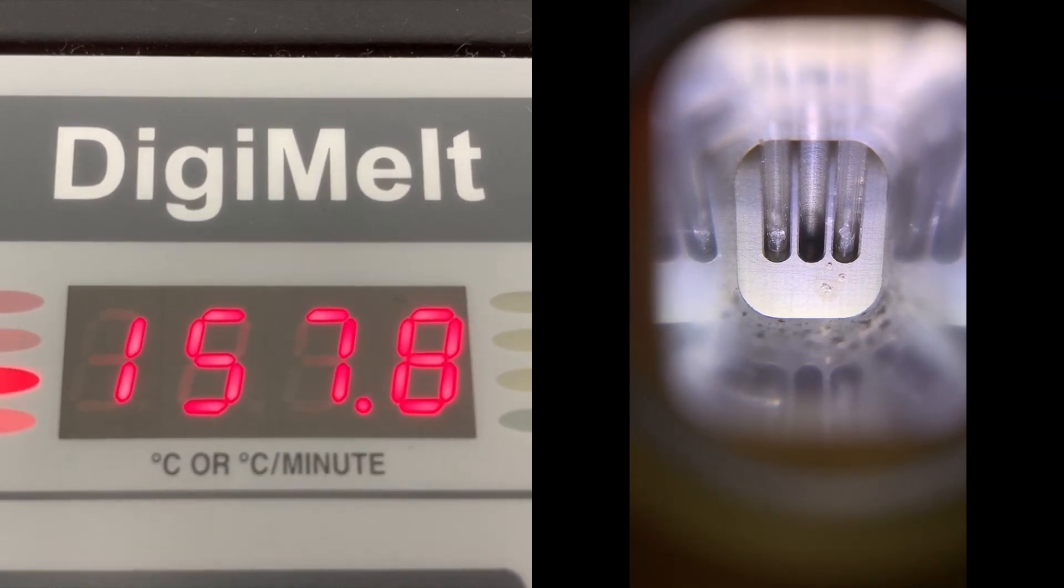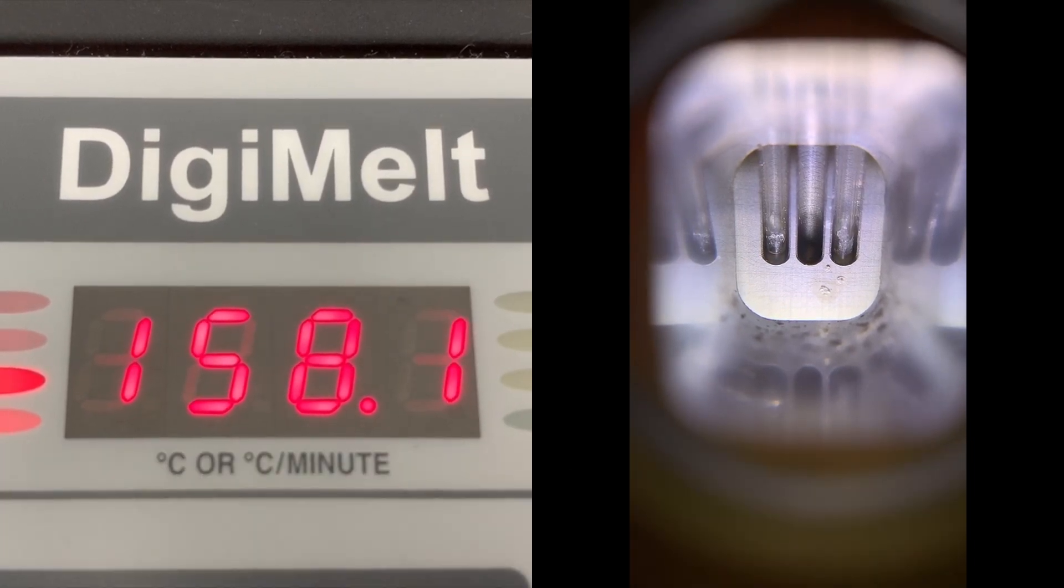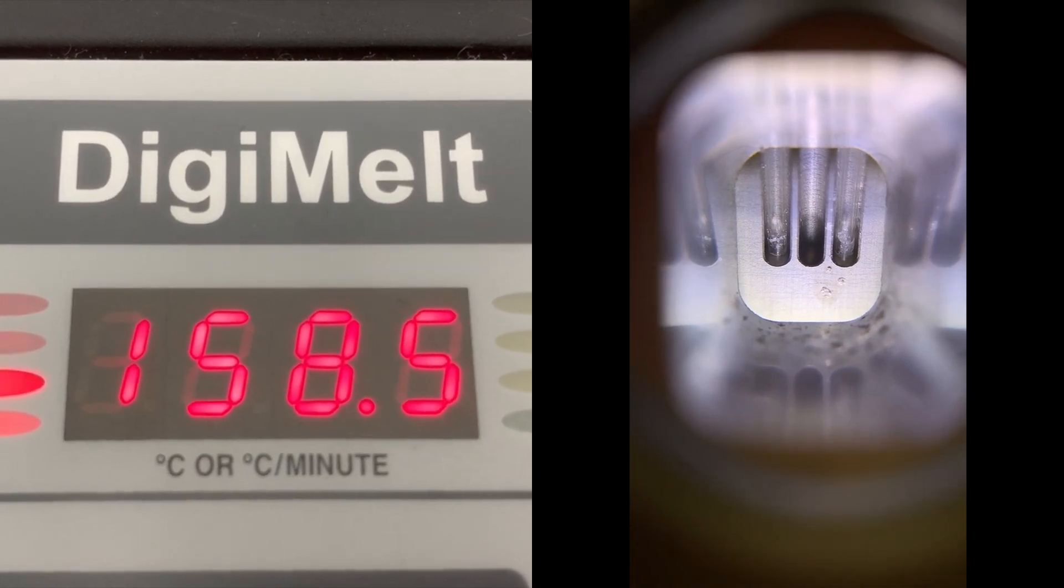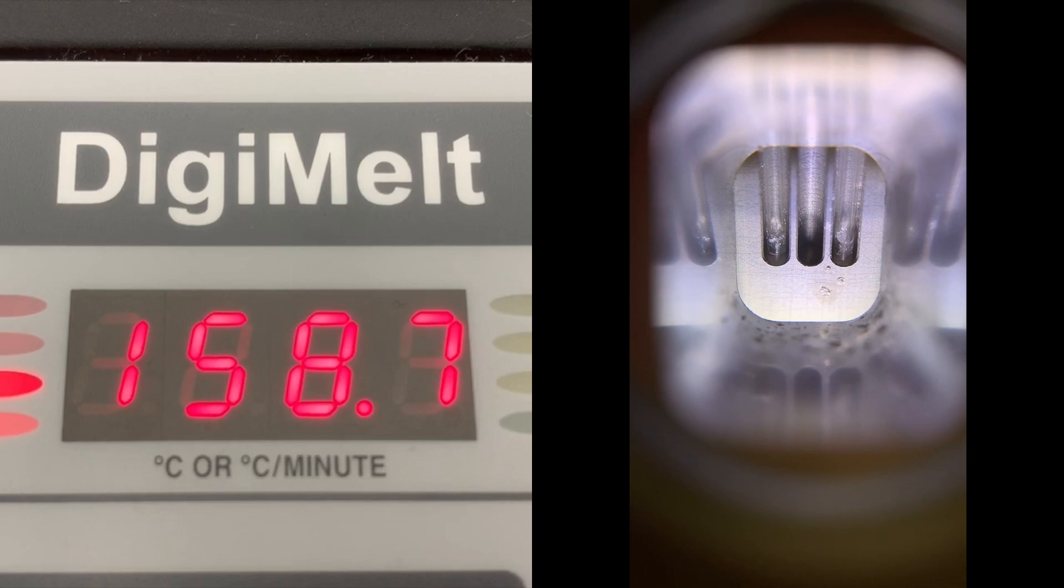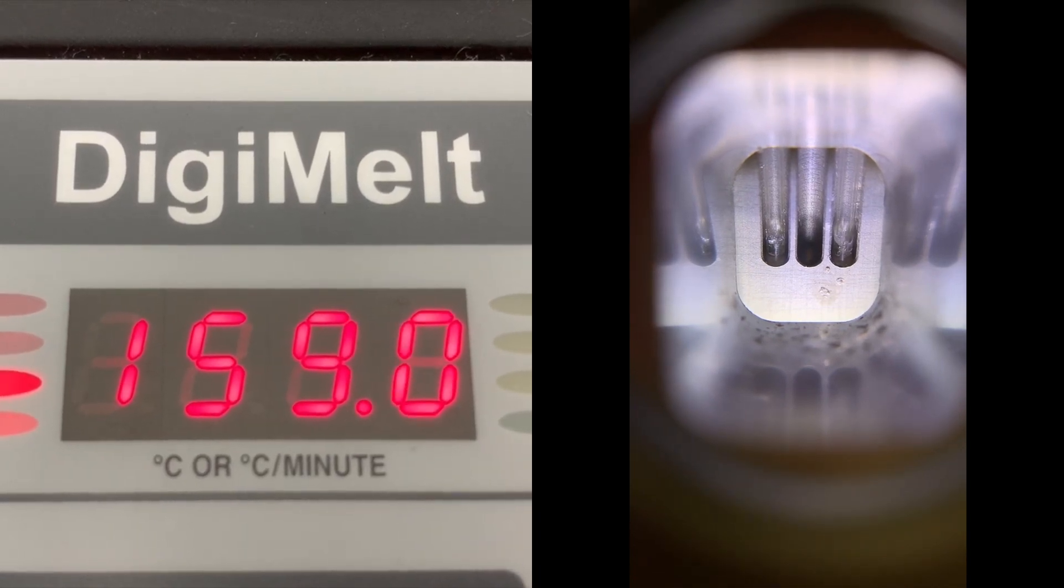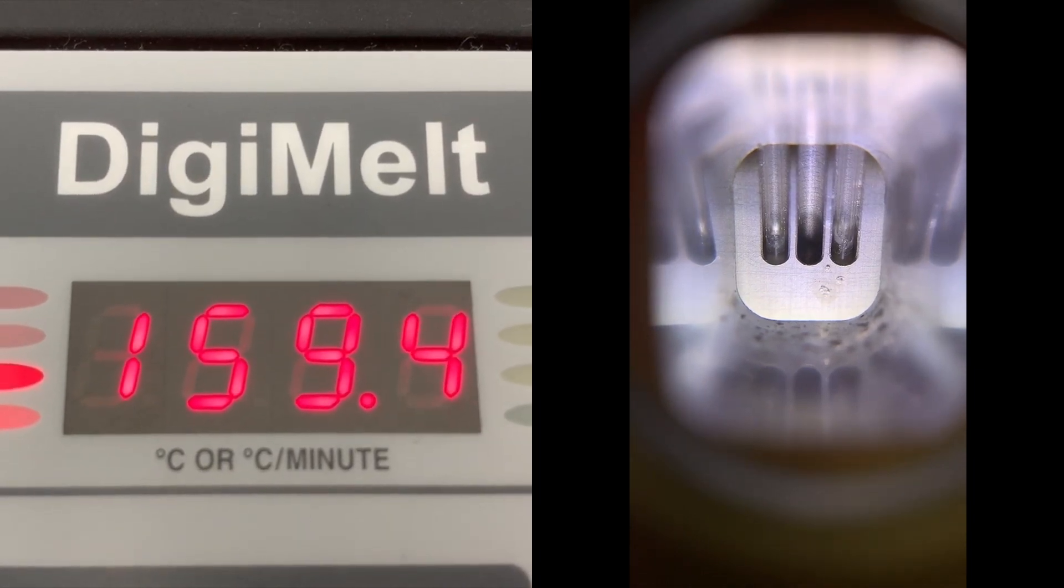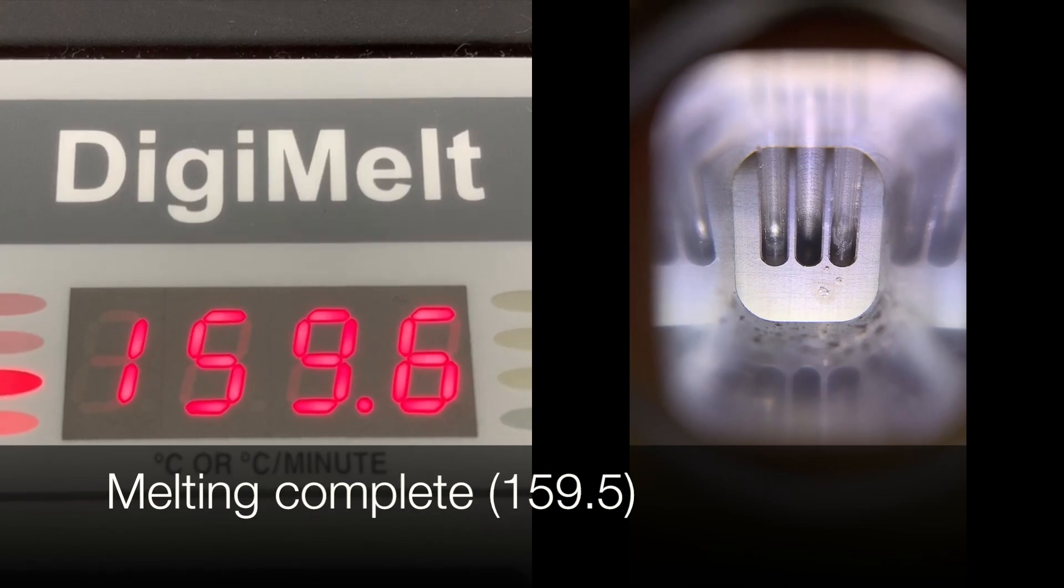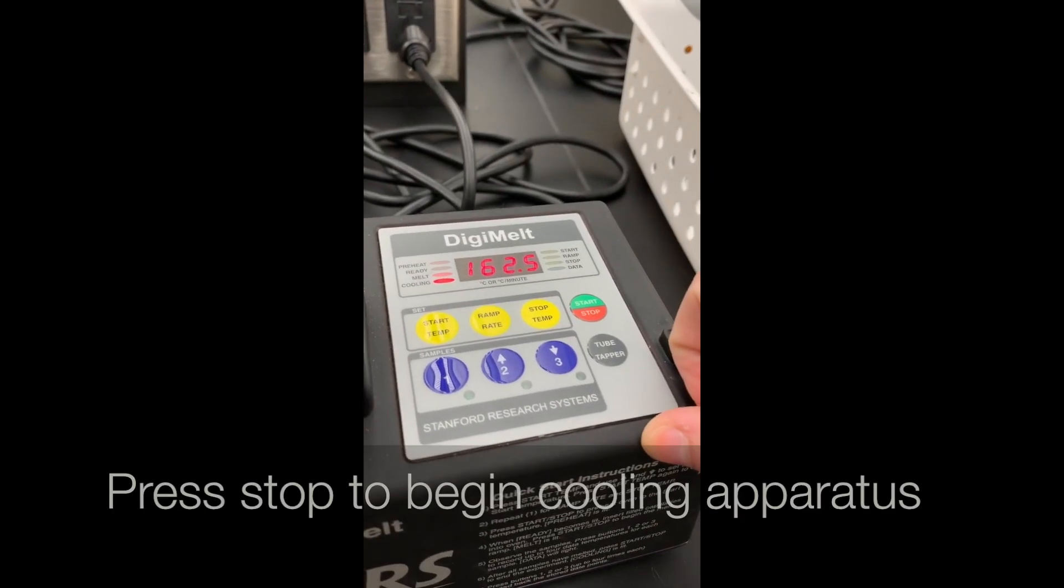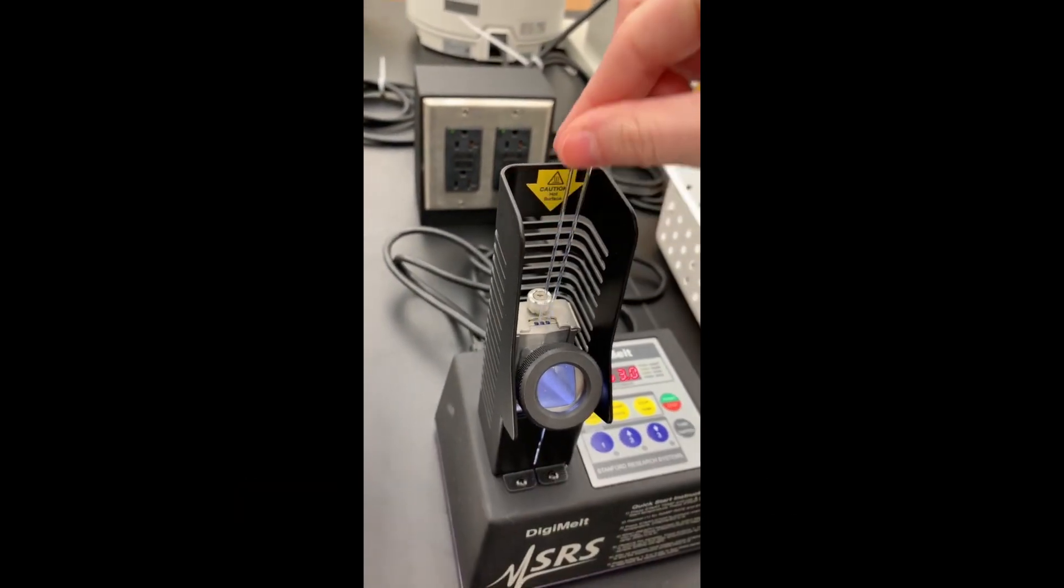Our sample begins to melt at 157.9 degrees Celsius. The sample continues to melt and when it reaches 159.5 degrees Celsius, it is completely melted. Now that it has completely melted, we press stop on the melt temp apparatus to begin cooling it. Then we remove the capillary tubes.